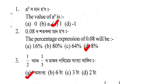Question 1: Each question carries 1 mark. MCQ type. First, the value of A degree — what is the value of A degree? Option A: 0, Option B: A, Option C: 1, Option D: minus 1. The correct answer is Option C, which is 1.